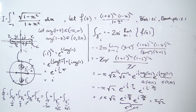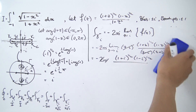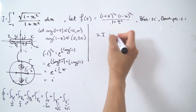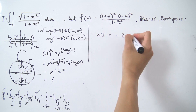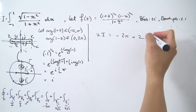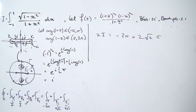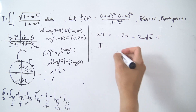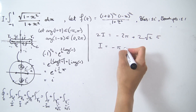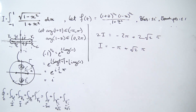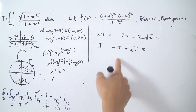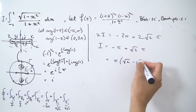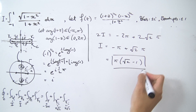Putting everything together: the left-hand side is 2i, and the right-hand side is −2π + π√2 + π√2 = −2π + 2π√2. Dividing both sides by 2 gives i = −π + π√2 = π(√2 − 1). So the final answer is π(√2 − 1).